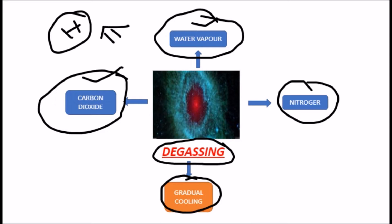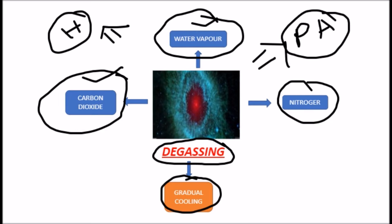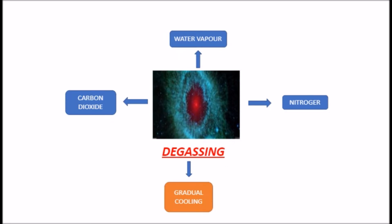The degassing of the nebula forms the primitive atmosphere. In the primitive atmosphere, the degassing is carbon dioxide and nitrogen, along with water vapor.